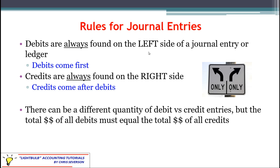For one final video we're going to be talking about the rules for journal entries. Just as a reminder, debits are always found on the left side and they always come first. Credits are always found on the right side and come after all of the debits. There can be a different quantity of debit or credit entries, but the total dollars of all debits must equal the total dollars of all credits.